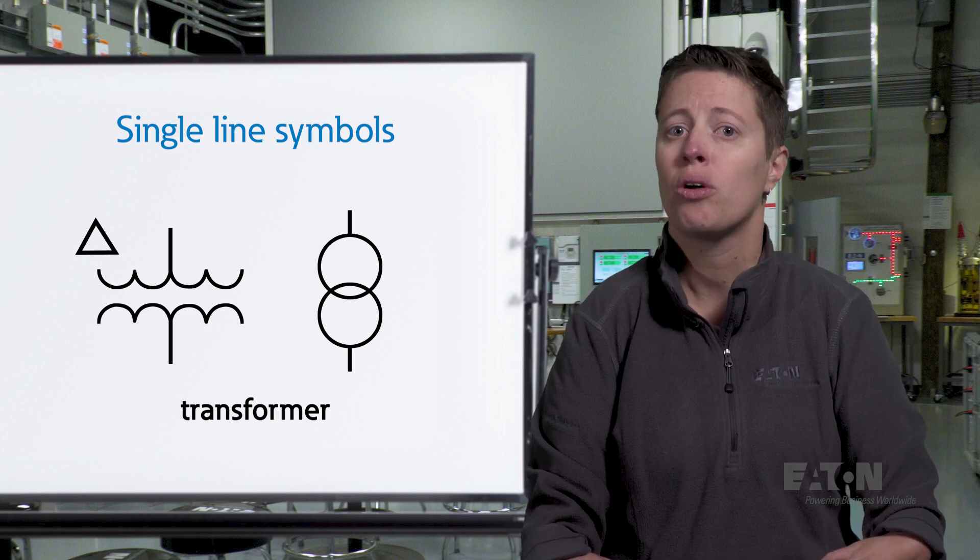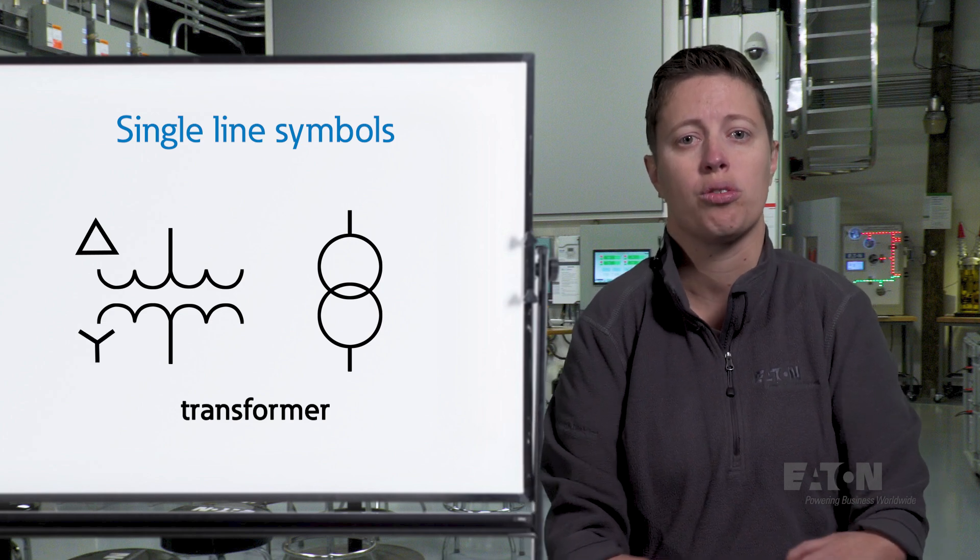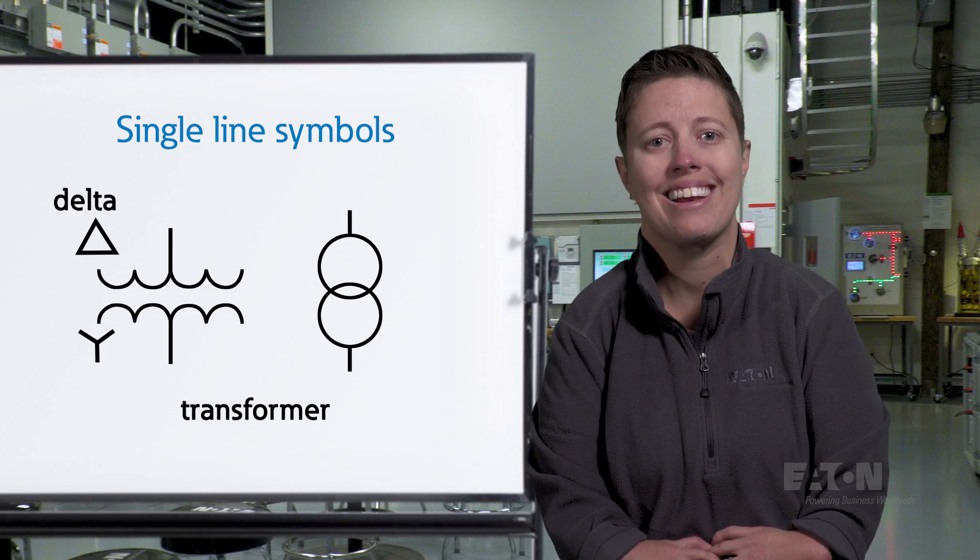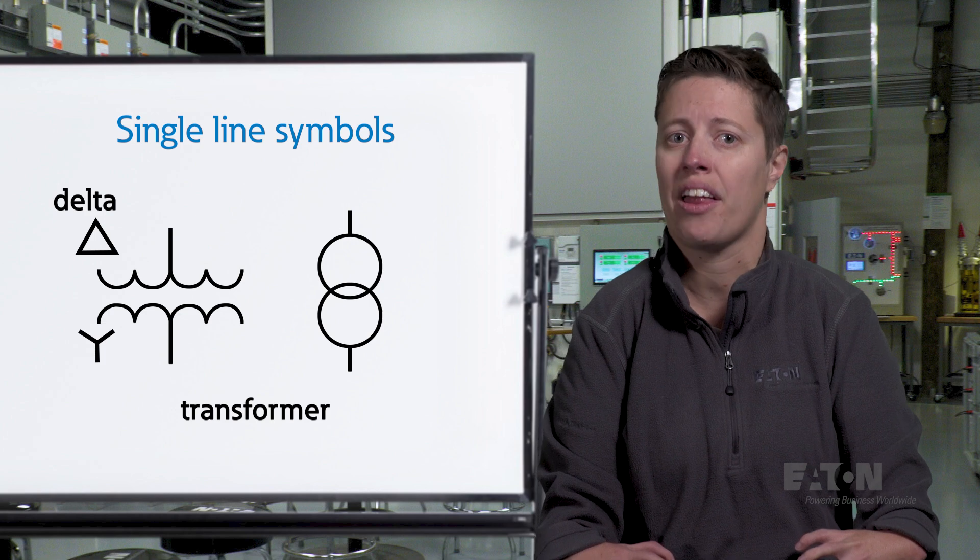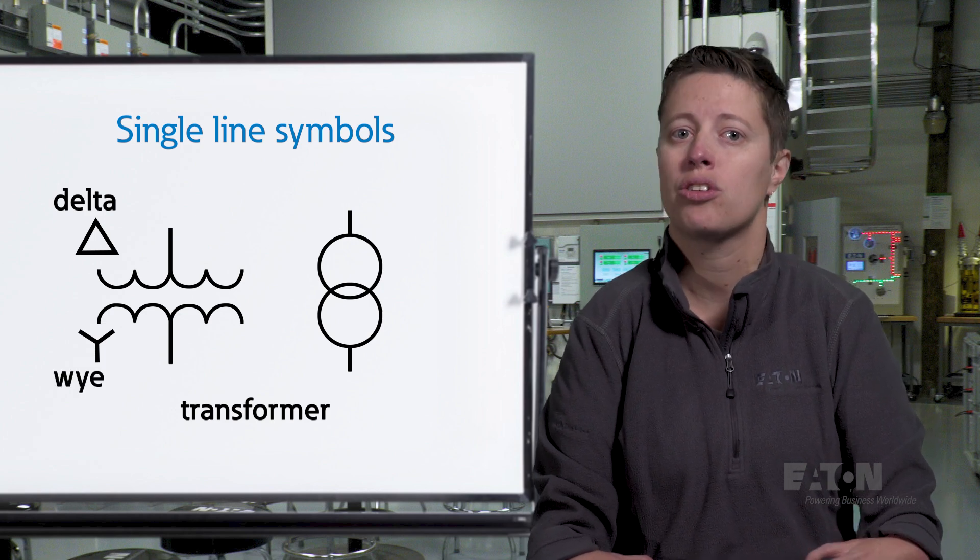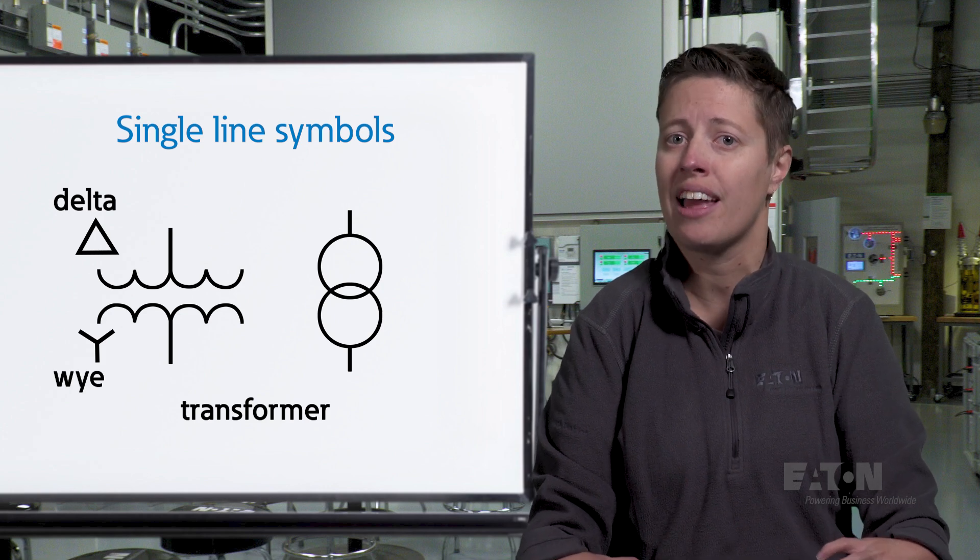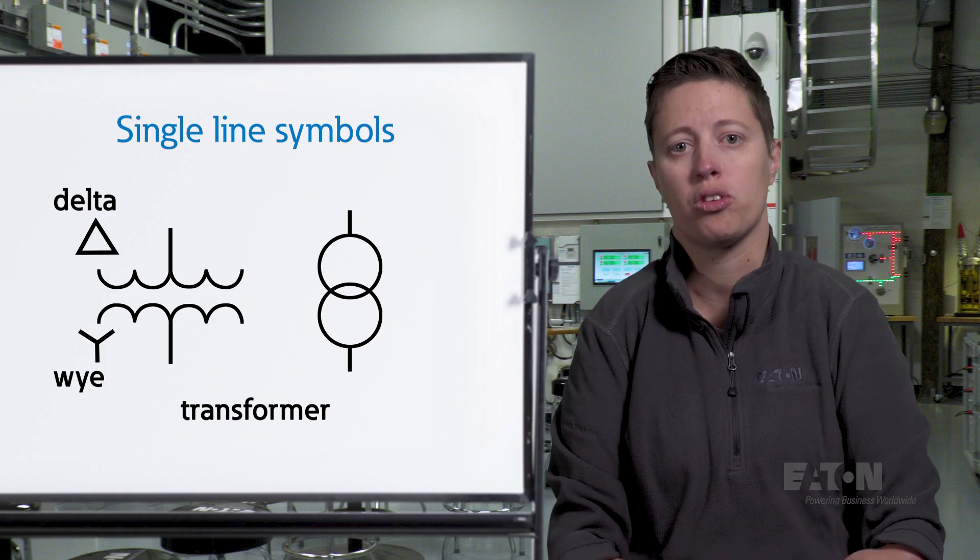You may notice a triangle or a symbol that looks like the letter Y along either side of the transformer. A triangle represents a transformer connected in delta, where all three phases are connected to one another, which resembles a triangle. A Y represents a transformer connected such that one end of each phase is connected to form a common neutral point, which resembles a Y.